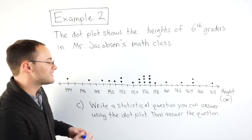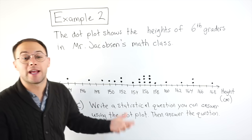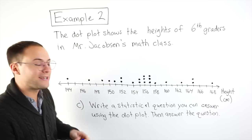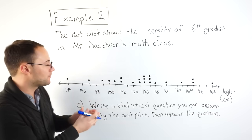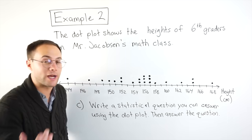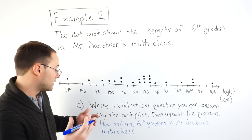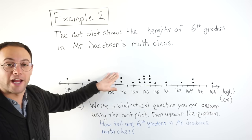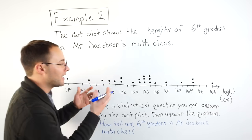Let's try part C. Okay. Finally, part C. Write a statistical question you can answer using the dot plot and then answer that question. So we're writing a statistical question. It has to be about the dot plot. Remember, this was about heights of students in my class. So maybe our question could be, how tall are 6th graders in Mr. Jacobson's math class? That is a question that we could answer using this dot plot. So that's great. There's our statistical question. And let's answer it.